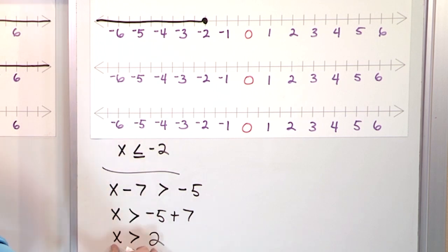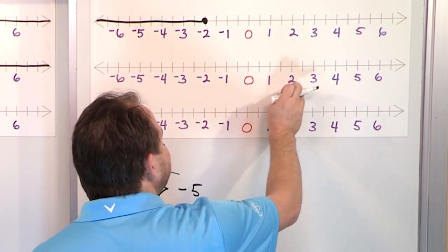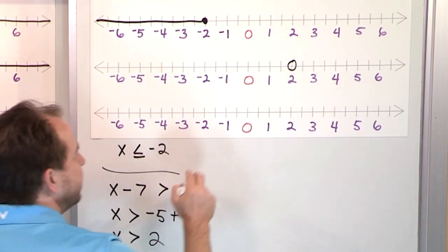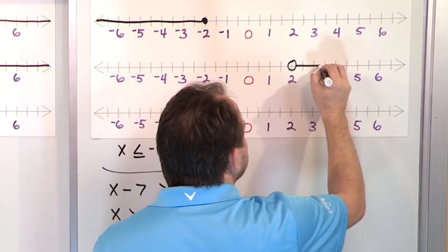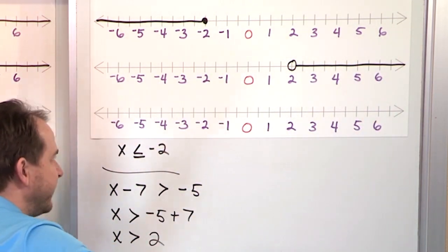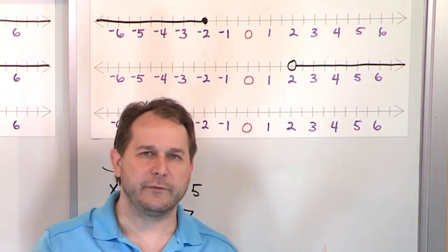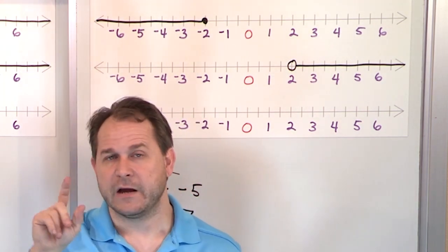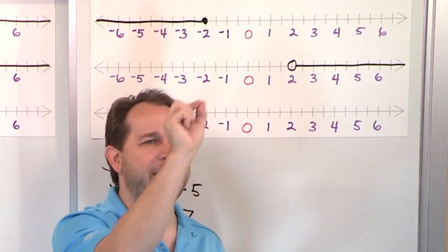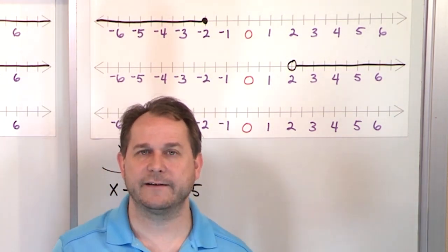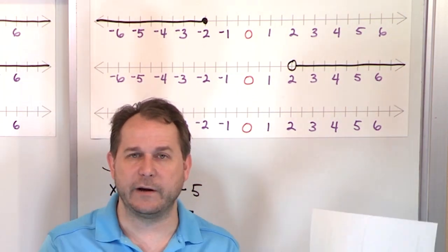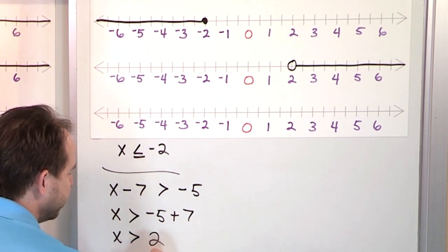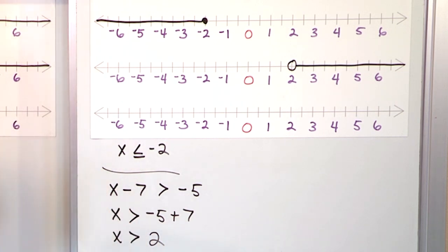To represent the solution as a graph, go find the 2 on the number line. Put an open circle because it's not greater than or equal — it's just greater than 2, then shade every number larger than this. It's very important in math to understand what the solutions mean. Just like with an equation you can check the solution by plugging it back in, with the inequality any number bigger than 2 actually makes this inequality work.